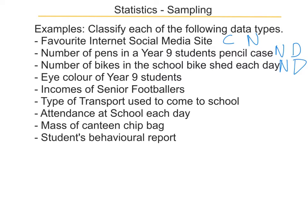Eye colour for Year 9 students is categorical because it's a colour, not a number, and it's nominal because there's no inferred order in colours. The next one — income of footballers — is numerical because it's a number (dollars), and even if it was cents, it's still a number. It's discrete because income won't be fractions of a cent. Transport used to come to school each day is categorical because it's a type of transport, not a number, and it's nominal because the type has no order inferred in it.